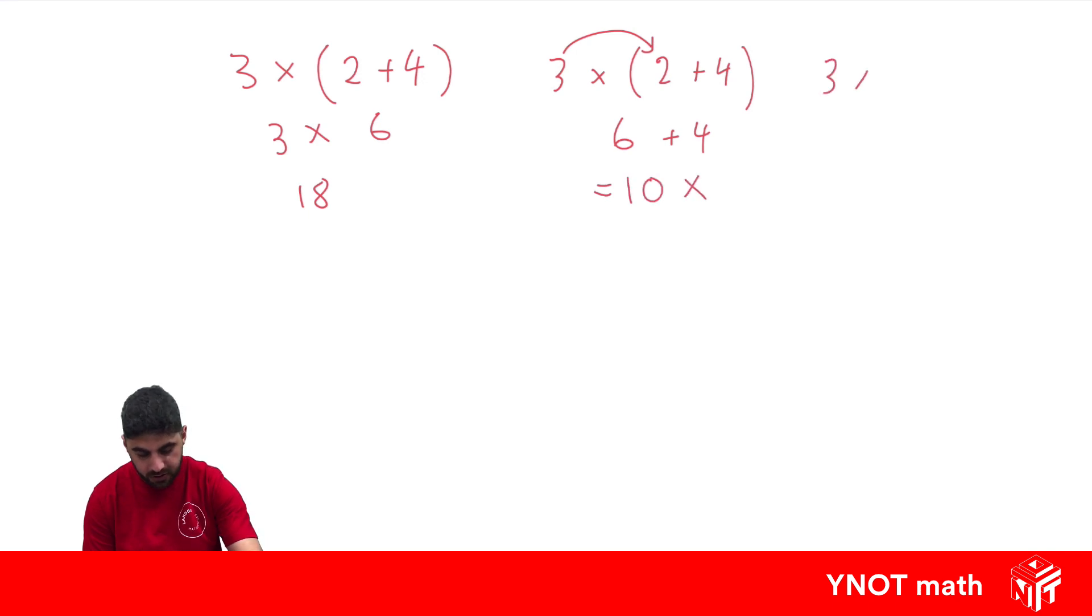So this time let's try 3 times 2 plus 4. Let's try timesing the 3 by both things first. 3 times 2 is 6, plus 3 times 4 is 12, and 6 plus 12 is 18, and that's the same as the answer we got before.